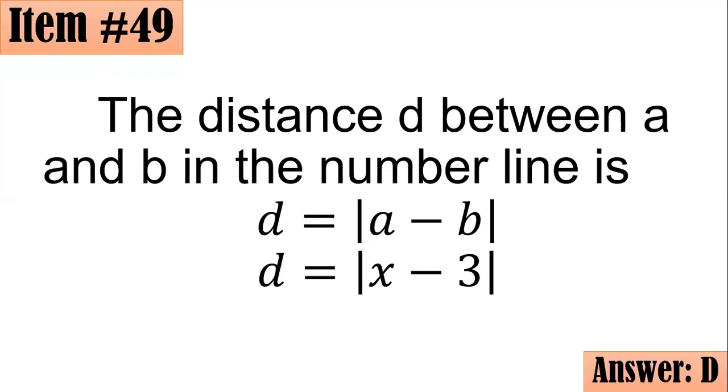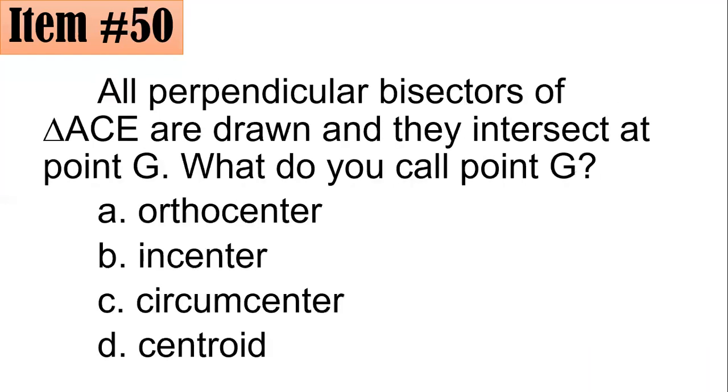And lastly, number 50. All perpendicular bisectors of triangle ACE are drawn and they intersect at point G. What do you call point G? Is it an orthocenter, incenter, circumcenter, or centroid?